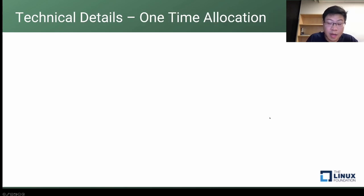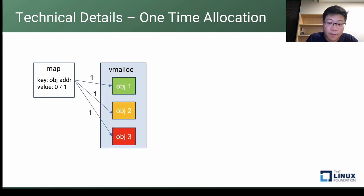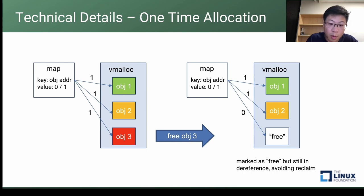Let me describe this process from another perspective. In the eBPF map, we have key and value. The key is the object address and the value is either 0 or 1, recording the status of the object in the V-Malloc region. So when object 3 is freed, the k-free handler hits object 3 in the map and changes its value to 0. However, the k-free handler won't actually free it. Therefore, the memory for object 3 will never be reclaimed, avoiding use-after-free exploitation techniques and achieving one-time allocation.